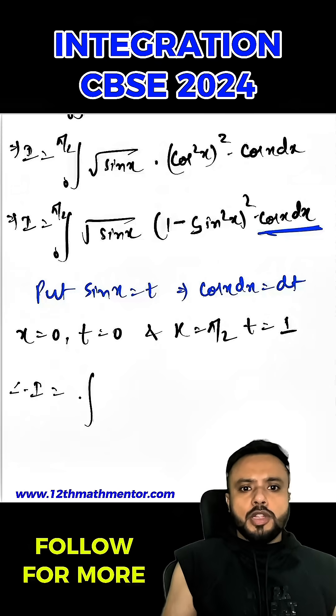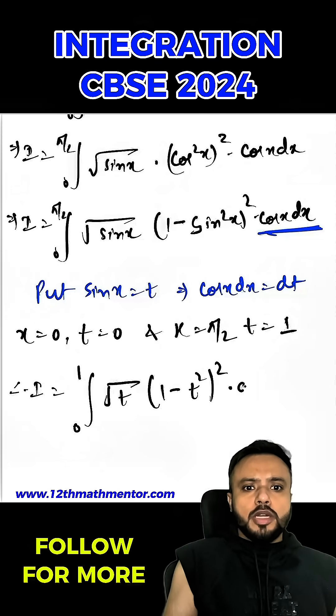So I can write the given integral in terms of t with new limits from 0 to 1 root of t into 1 minus t square into dt.